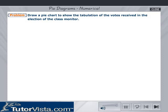Draw a pie chart to show the tabulation of the votes received in the election of the class monitor. Chandu received 2 votes, Rahul 4, Suman 6, Prashant 5, and Ajit received 3 votes.